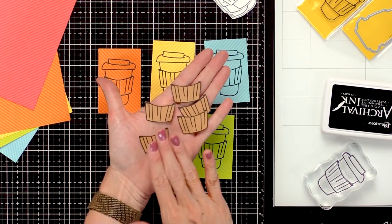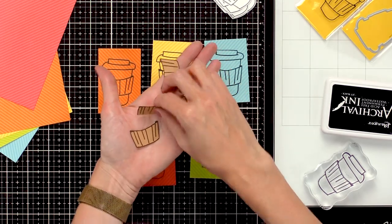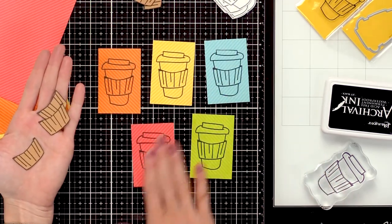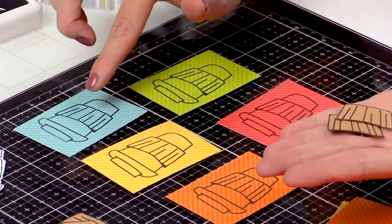So now I have the 5 coffee cozies all cut out and now we're going to move onto the colored cardstock and cut out the cups.